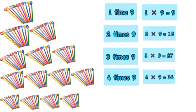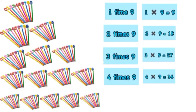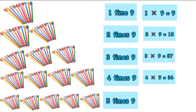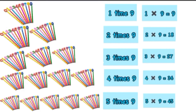Next, in four sets of nine pencils, when we add one more set of nine pencils, it will become five sets of nine pencils. So we can read it as five times nine and write it as five multiplied by nine, and it is equal to 45.